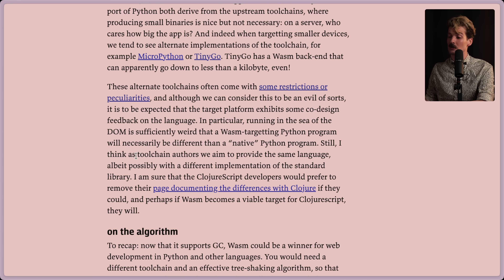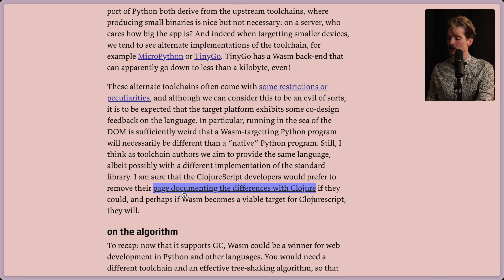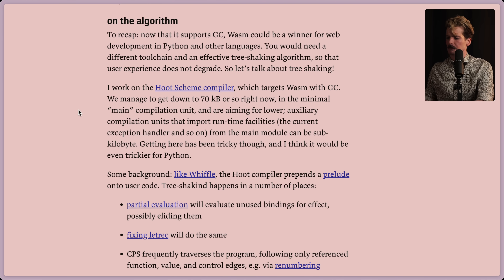Still, I think as toolchain authors, we aim to provide the same language, albeit possibly with a different implementation of the standard library. I am sure that the ClojureScript developers would prefer to remove their page documenting the differences with Clojure, if they could. And perhaps if Wasm were to become a viable target for ClojureScript, they will. To recap: now that it supports GC, Wasm could be a winner for web development in Python and other languages. You would need a different toolchain and an effective tree-shaking algorithm so that user experience does not degrade.